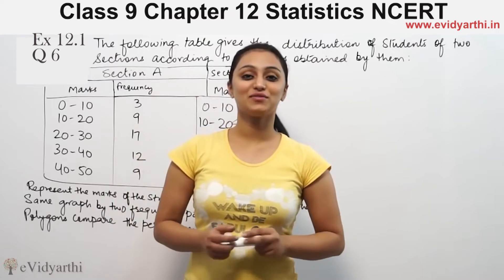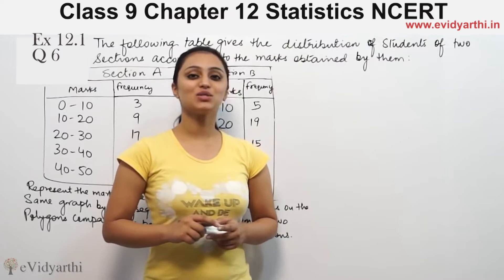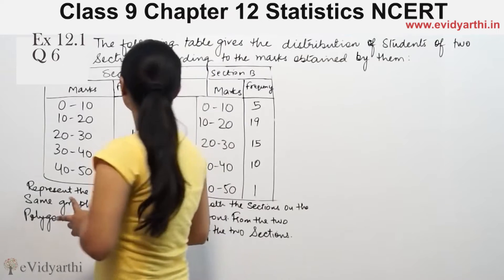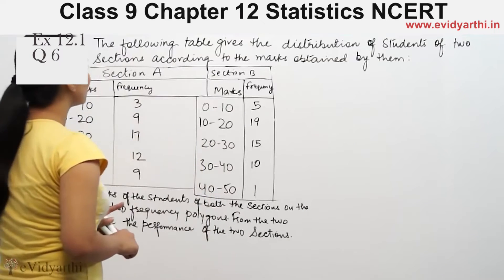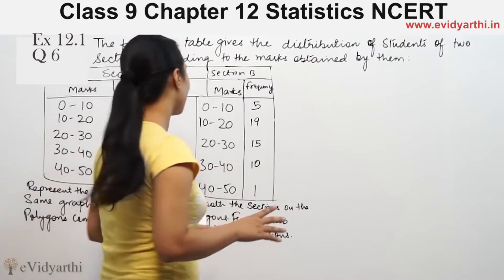Hi, this is Khushbu with another question of statistics. This is question number 6 from exercise 14.3, page 260 from NCERT. There is the following statement: It gives a distribution of students of two sections according to the marks obtained by them.